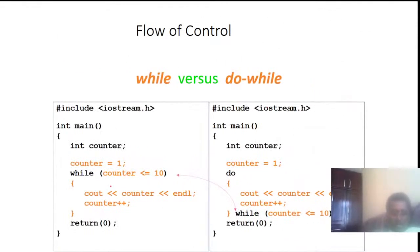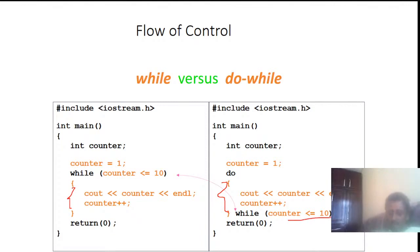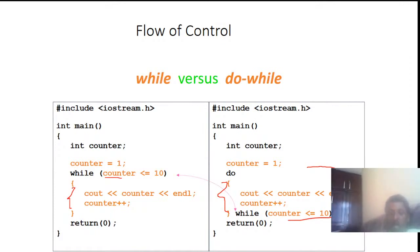While versus do-while: in the while loop, the condition is tested before the body of the block of code is executed. But in the do-while loop, the block of code is executed first, then the condition is checked at the end of the block. This is the key difference. In a while loop, the condition is checked first. In a do-while loop, the block of code is executed one time first, then the condition is checked. Next time, the condition is checked again.